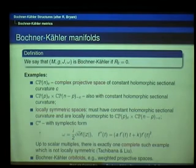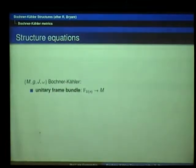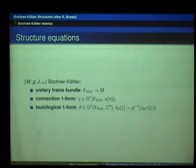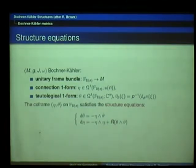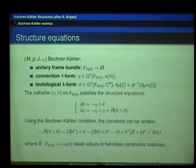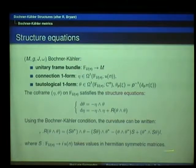How does one find more examples? There is the usual differential analysis that one can proceed with and try to solve the equations. Suppose I have my Bochner-Kähler manifold and I look at its unitary frame bundle. I have the connection one-form for the Levi-Civita connection and the tautological one-form. These satisfy the usual structure equations and form a co-frame on the unitary frame bundle. Using the Bochner-Kähler condition, one sees that one can express the curvature in terms of some function taking values in Hermitian symmetric matrices.